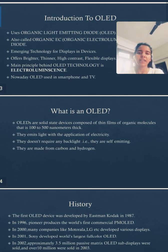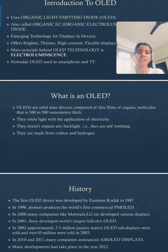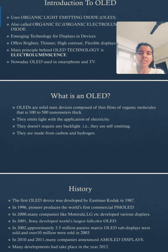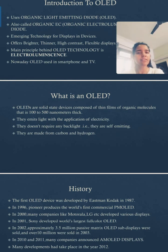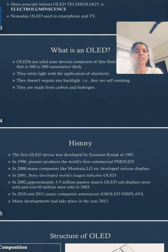OLEDs are devices made from a thin film of organic molecules that is 100 to 500 nanometers thick. They emit light with the application of electricity. They don't require any backlight — that is, they are self-emitting. They are made from carbon and hydrogen.